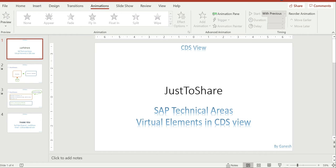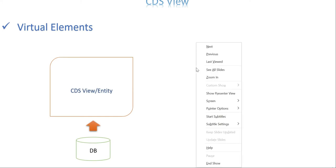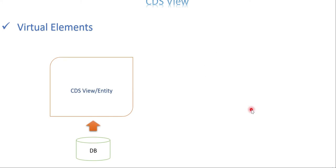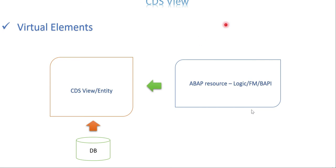Let us get into the slides first. CDS, as explained, sits on top of your database and retrieves data — mostly we use SQL and SQL functions. Now and then we have a requirement to use some ABAP resources or logic to get information for us. Very commonly we use the read text function module, or we need items from a function module — purchase order, sales, whatever it is. For those scenarios we are going to use the concept called virtual elements in CDS.